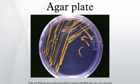Bile esculin agar is used for the isolation of Enterococcus as well as Group D Streptococcus species. Cystine lactose electrolyte-deficient agar is used to isolate and differentiate urinary tract bacteria, since it inhibits Proteus species swarming and can differentiate between lactose fermenters and non-fermenters. HE agar is designed to isolate and recover fecal bacteria belonging to the Enterobacteriaceae family, and is particularly useful in isolating Salmonella and Shigella.